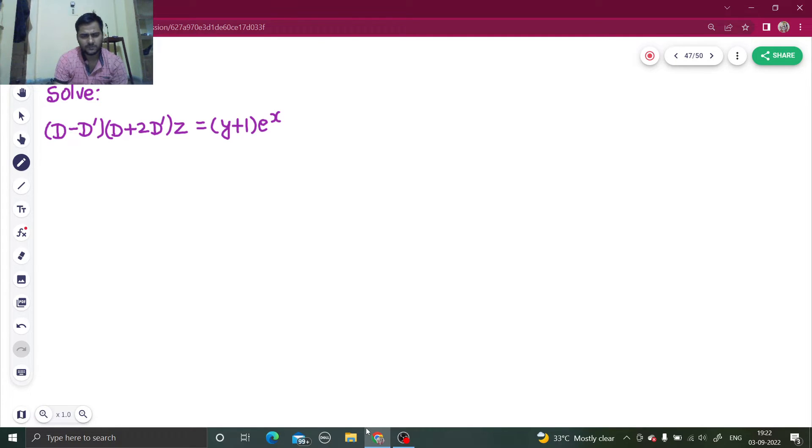The first step is obviously to find the complementary function. We have this (d minus d dash) multiplied by (d plus 2 d dash) z equals to zero.